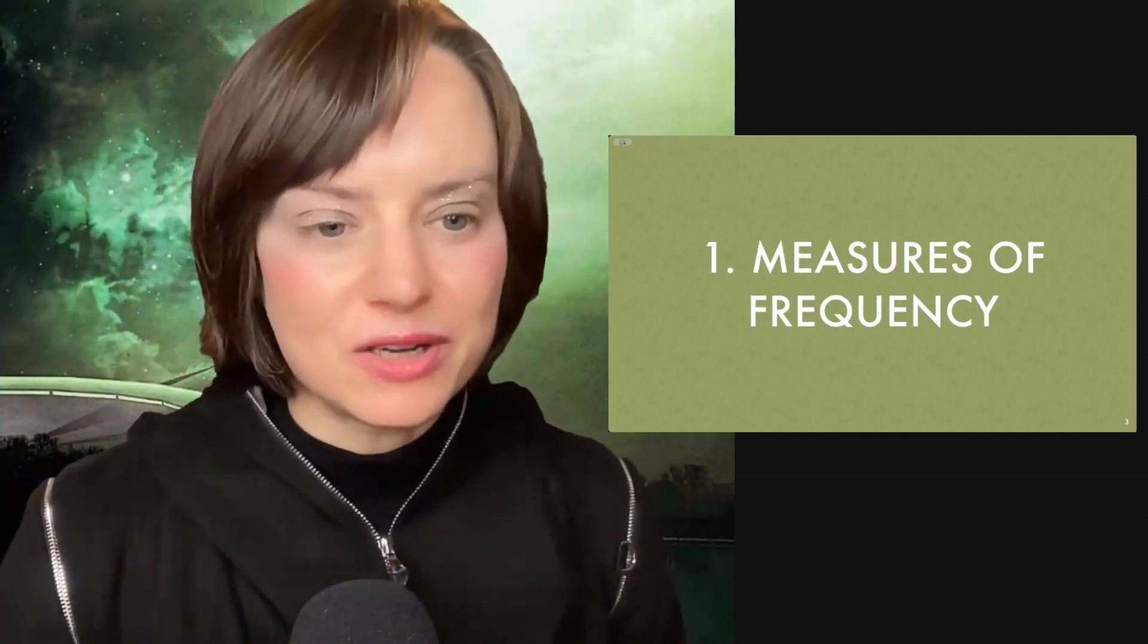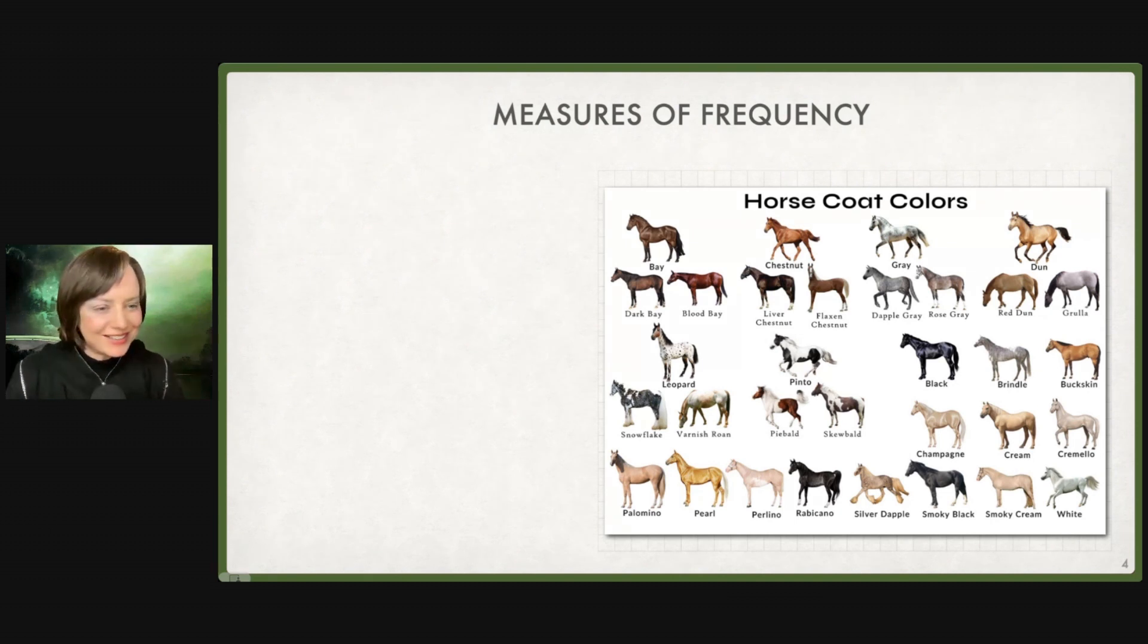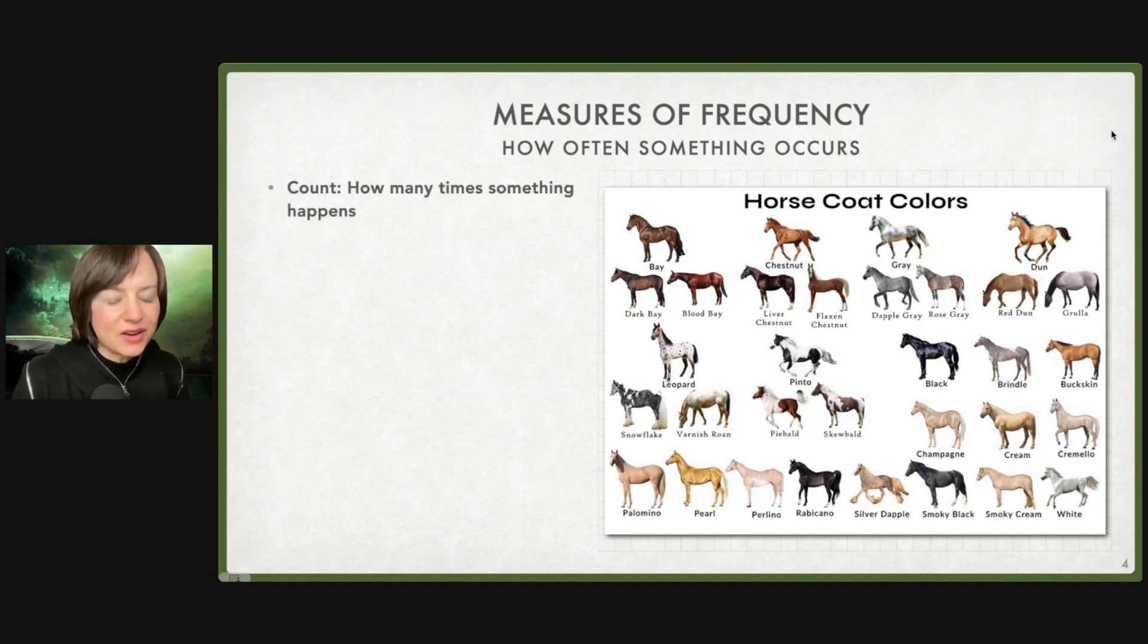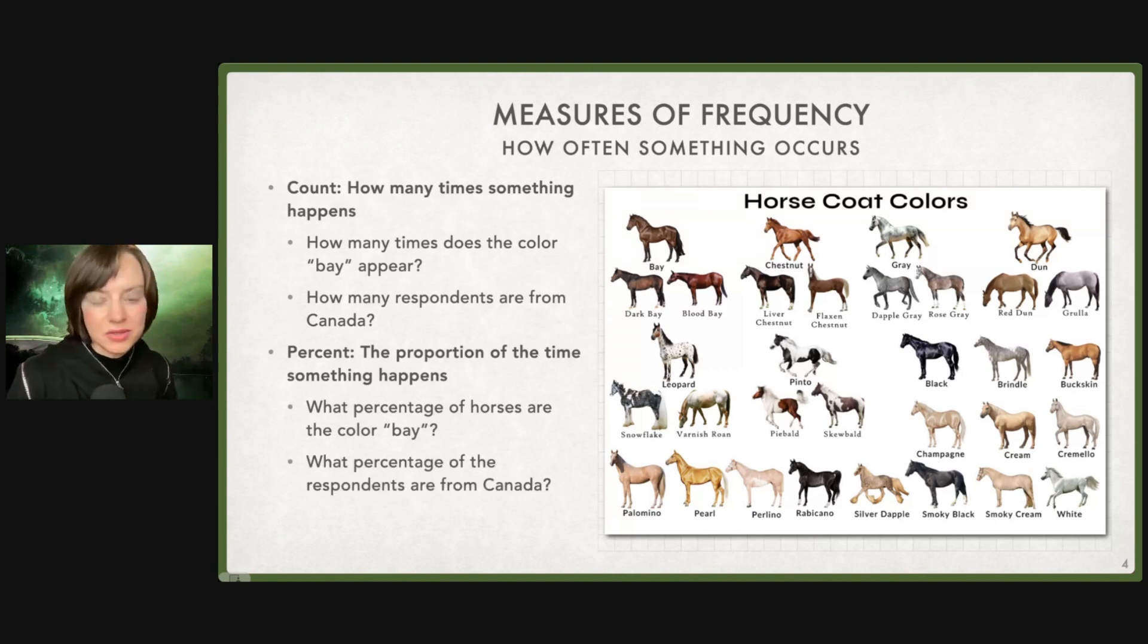The first one I want to focus on is measures of frequency. This can be very basic, but we often forget about it. I've picked here an example with horse coat colors. We could say how often does something occur, just count something. How often are horses bay colored or chestnut colored? How often are there wars? How many people got infected? How many respondents in my survey are from Canada? A lot of times we just skip over this. It's so basic, but that can be a perfectly good observational start to our data.